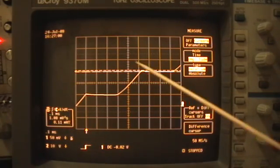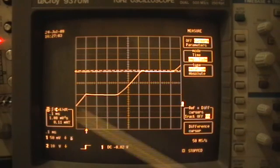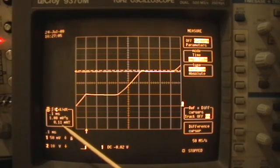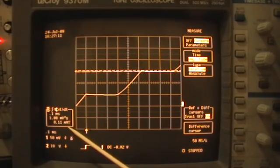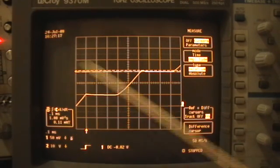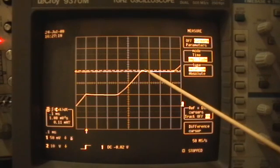So that little dip of energy right there represents 0.11 millijoules. So that's 110 microjoules of energy per cycle that's going back into the battery.